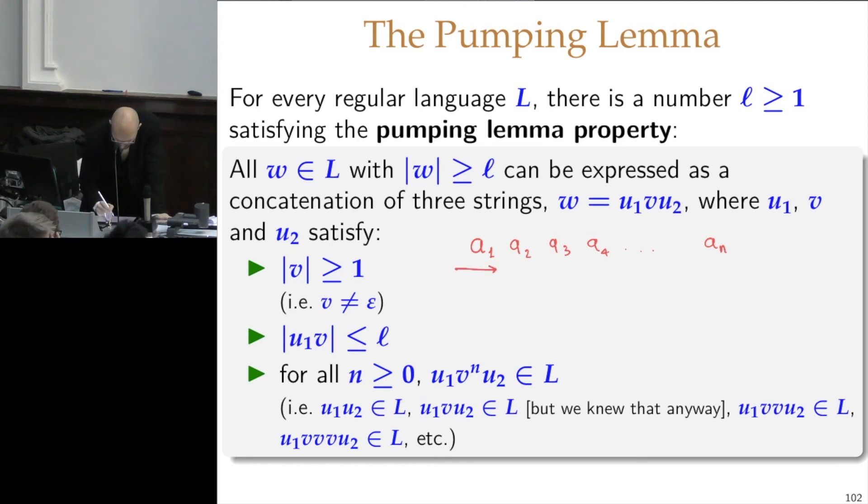Each symbol causes a transition starting from the starting state. Now, how many of these states am I drawing? There are n transitions, so there are n plus one blobs in my drawing. But I said there exist only n states, so two of these blobs, I don't know which two, but two of these blobs will be the same, will be the same state.